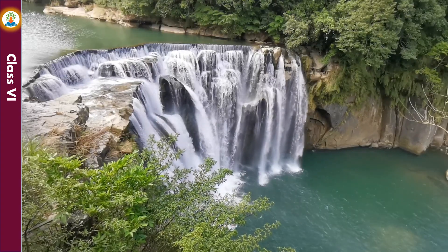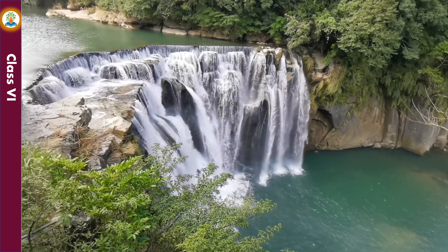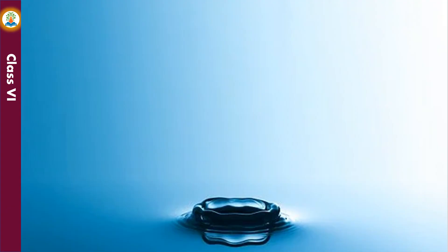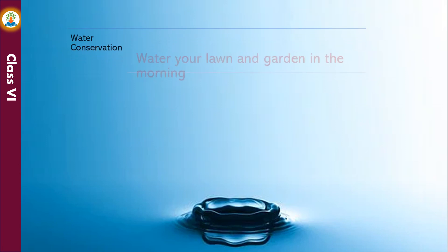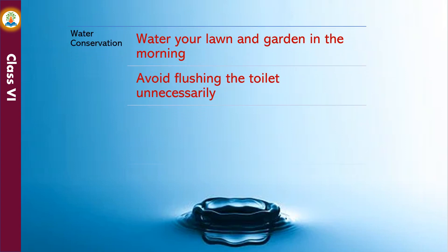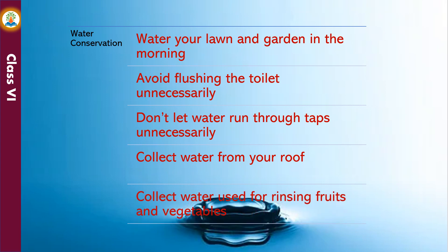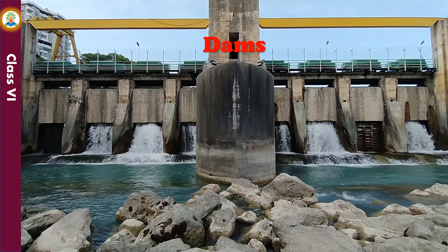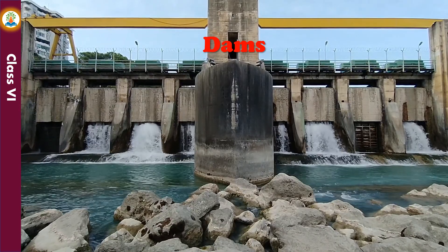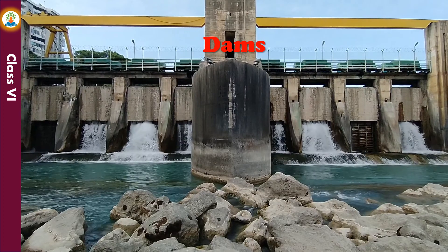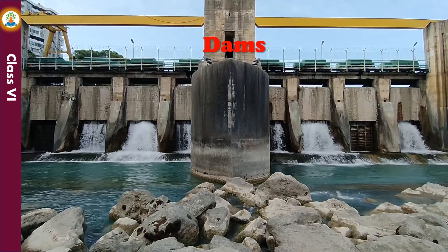Water is a limited natural resource; therefore, we must make efforts to conserve water. Water conservation means using water wisely. As responsible citizens, we must understand the need to conserve this natural resource. Simple actions include watering your lawn and garden in the morning, avoiding flushing the toilet unnecessarily, and not letting water run through taps unnecessarily. A dam is a barrier constructed to hold back water and raise its level, forming a reservoir behind it. Dams serve the primary purpose of retaining water and are also used to generate electricity.